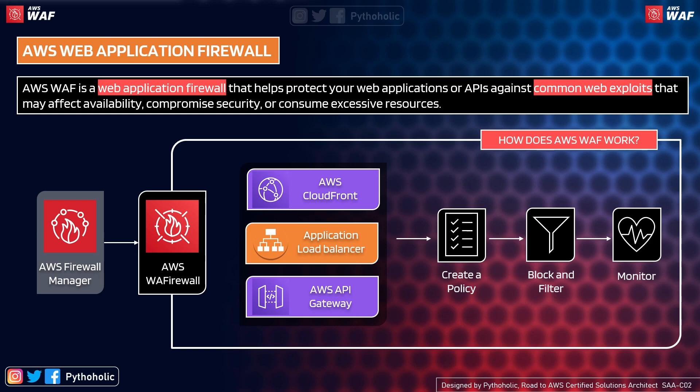So I've talked about Firewall Manager, and before moving forward, remember these three key points: you create a policy, you configure it to block and filter, and then you monitor. These three steps represent the core idea of how a web application firewall works in AWS.